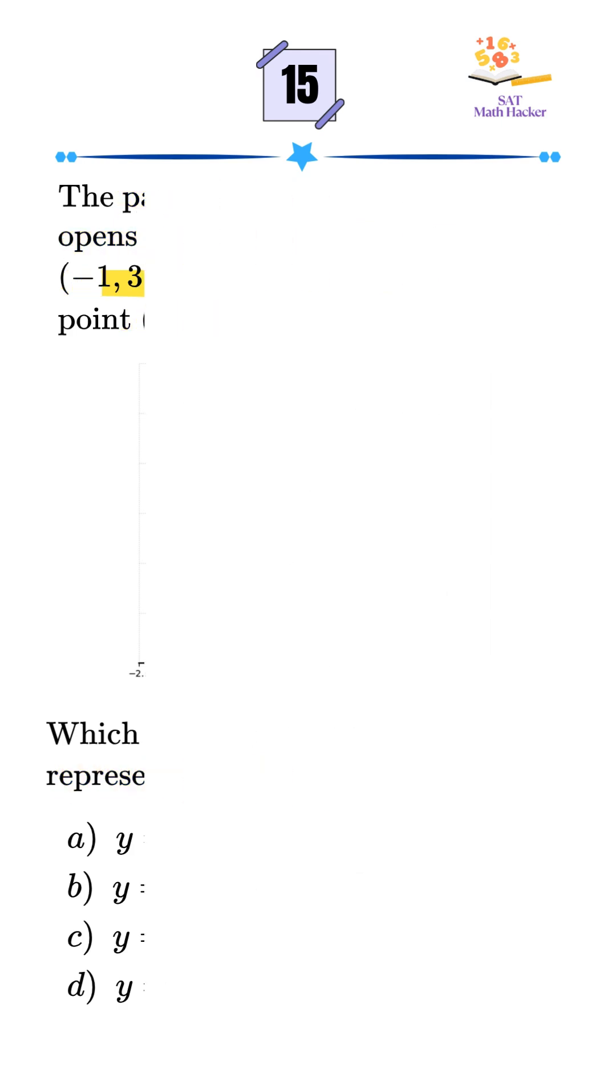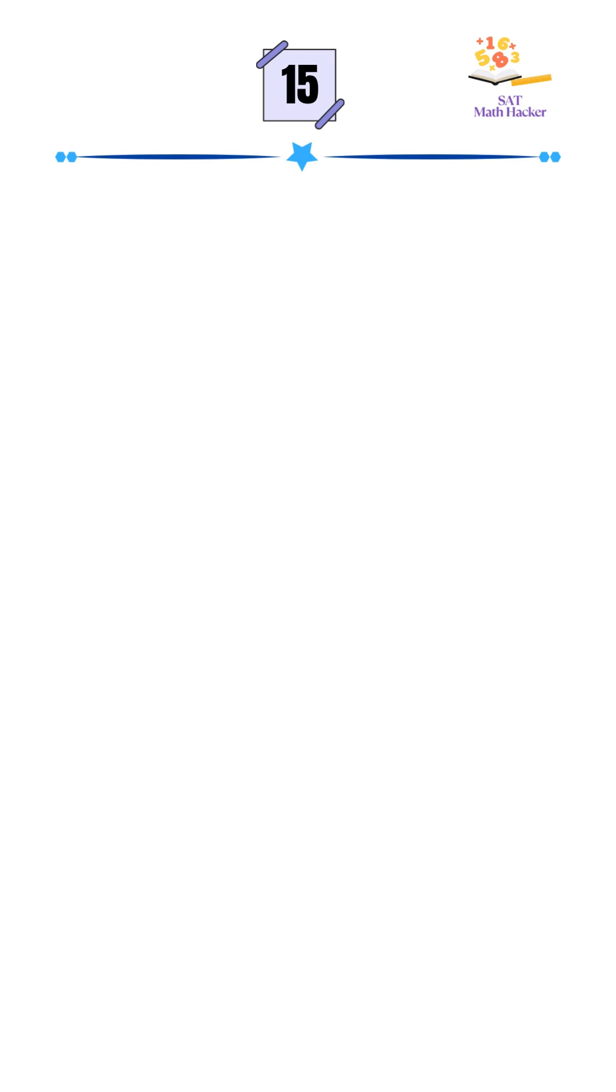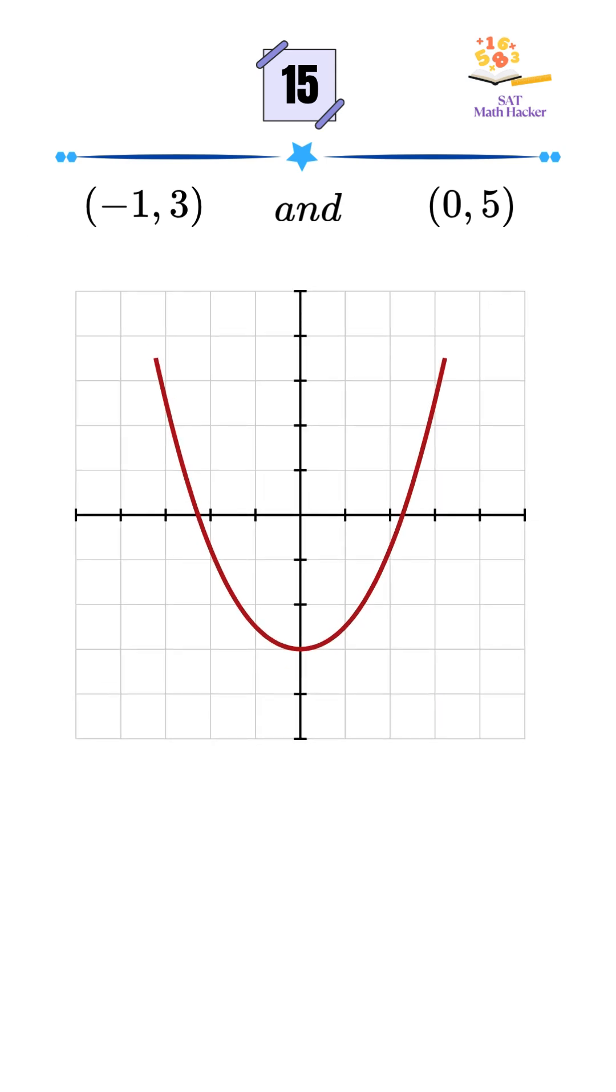Now instead of solving this from scratch using vertex form, let's use the answer plug-in technique. Since we're told that both points negative 1 comma 3 and 0 comma 5 lie on the parabola, that means the correct equation must satisfy both points.